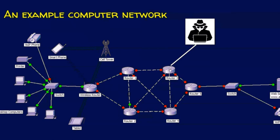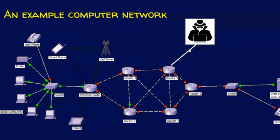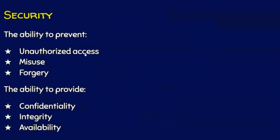So it becomes an important task for a computer network to provide confidentiality — meaning the data is not sent just as-is; if it is confidential, it is converted to a different form that can only be understood by the sender and the receiver. At the same time, there should be no modification of the data in transit — the network should provide integrity, meaning whatever the sender sends, only that should be received. Attackers also try to deface web servers so that resources become unavailable for access. So it is the ultimate responsibility of a computer network to provide security — preventing unauthorized access, misuse, and forgery, and providing confidentiality, integrity, and availability.